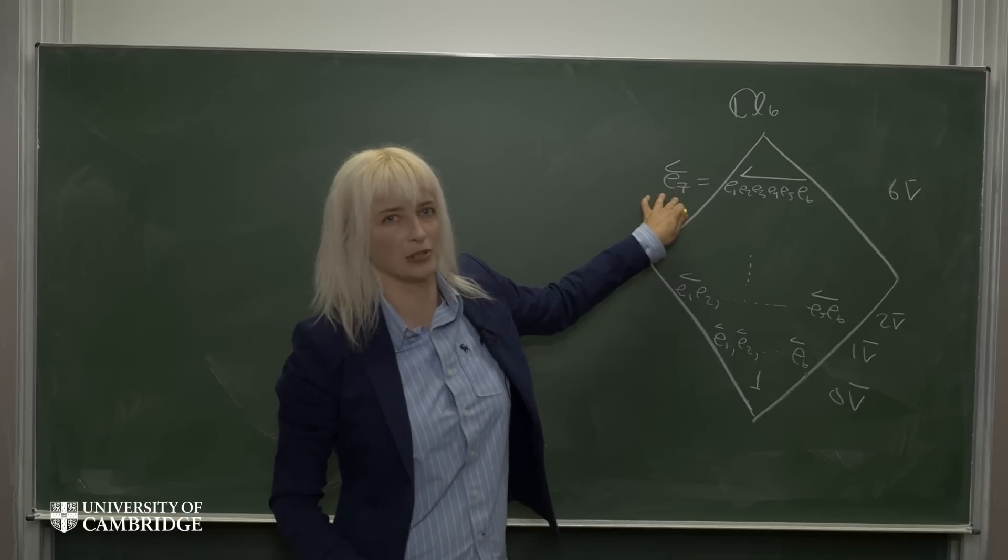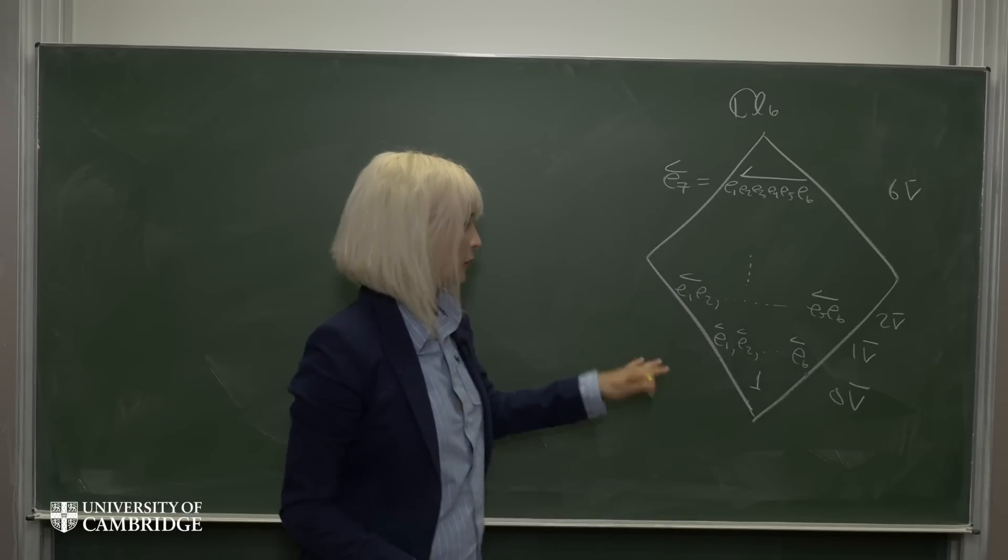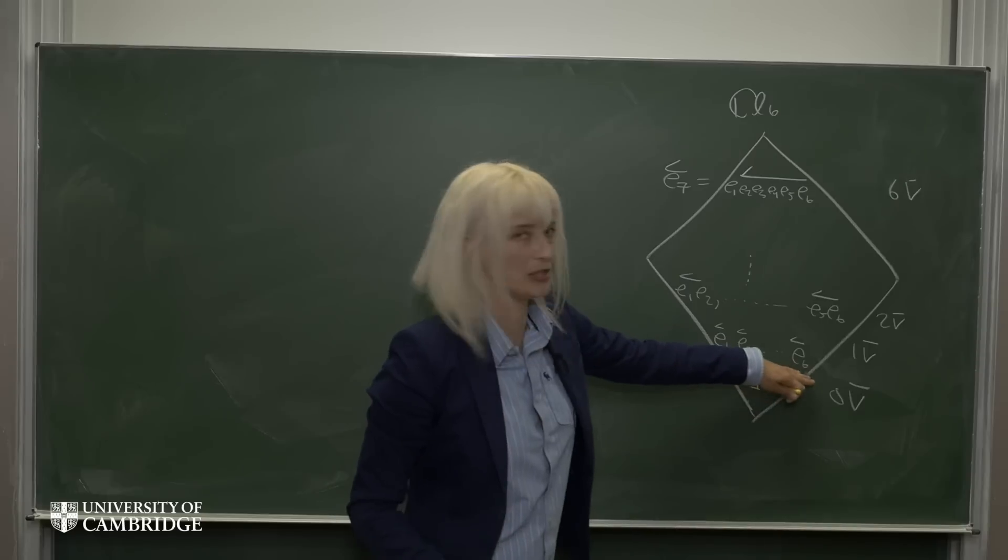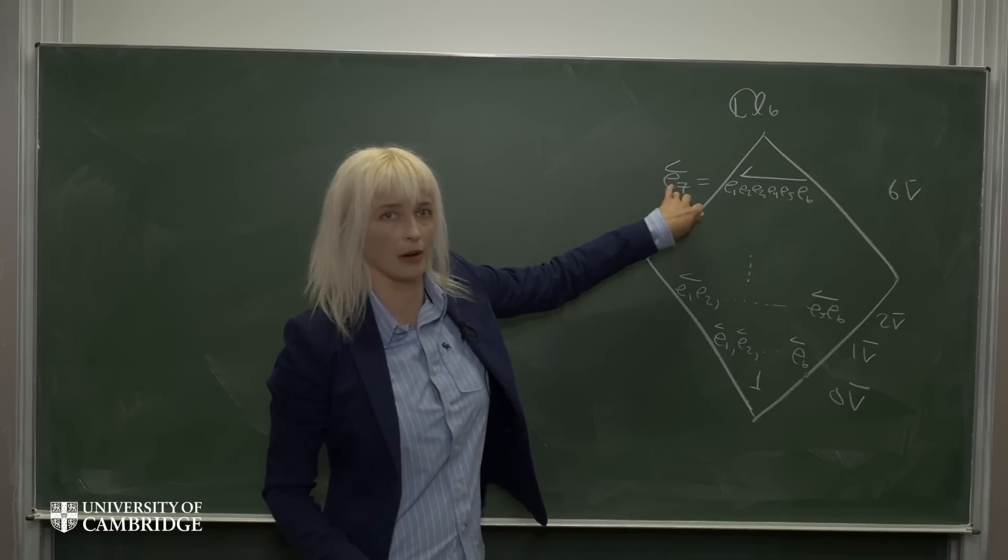So now, of course, e7 isn't special within the octonions. You could have put any of the imaginary units up here. If I would have put any of the six imaginary units of the octonions in the generating space here, the seventh one will always end up at the top.